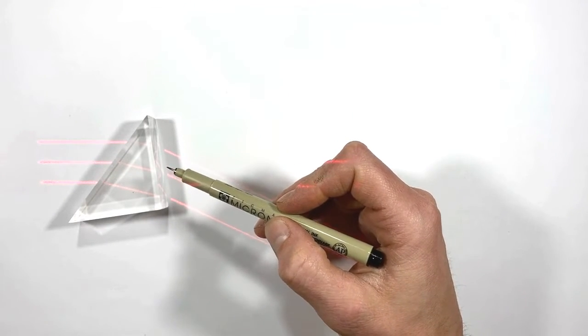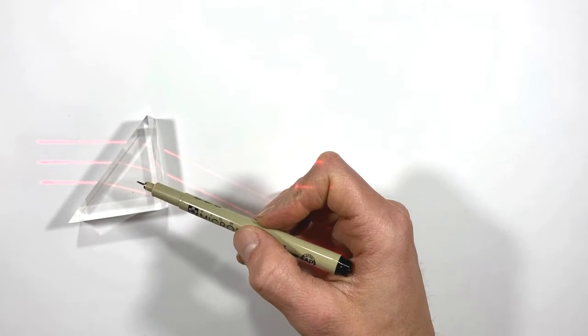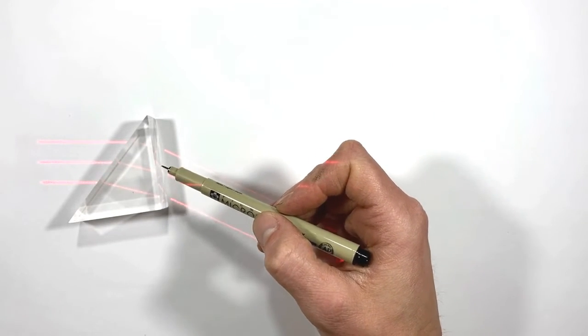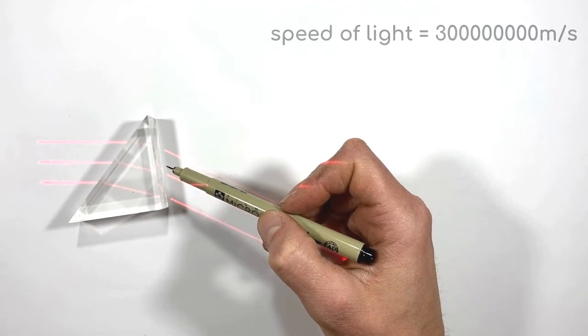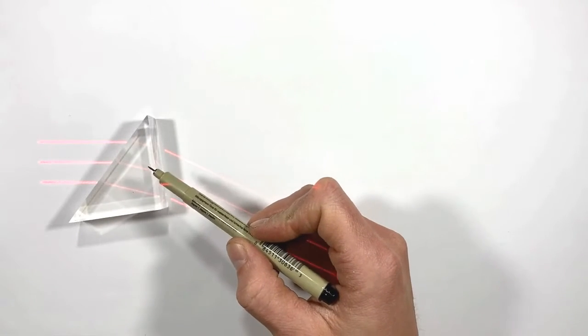And whenever a light ray passes from one medium into another, like from air into glass, it changes speed. Now in a vacuum the speed of light is about three times ten to the eighth meters per second. But when it passes through something like glass it appears to slow down.